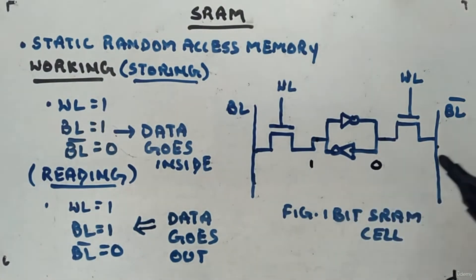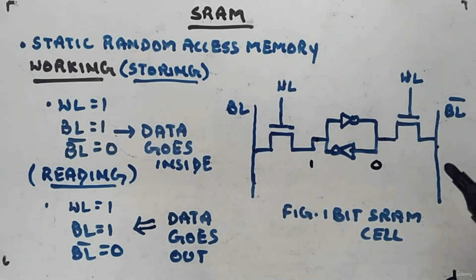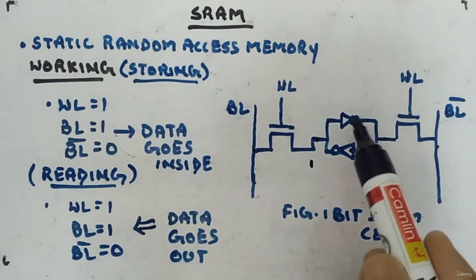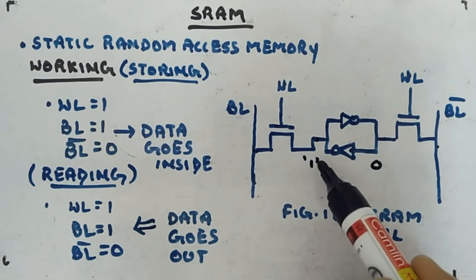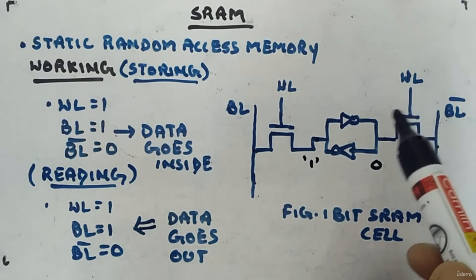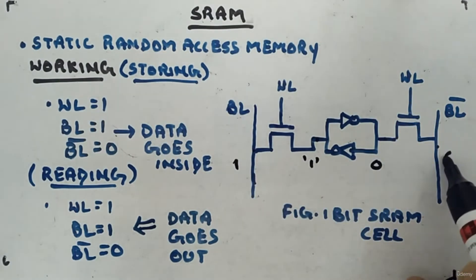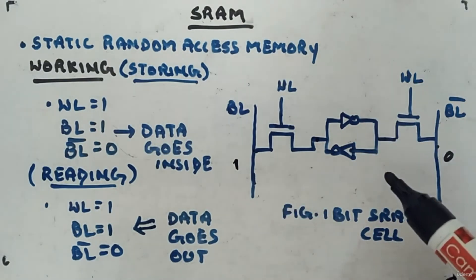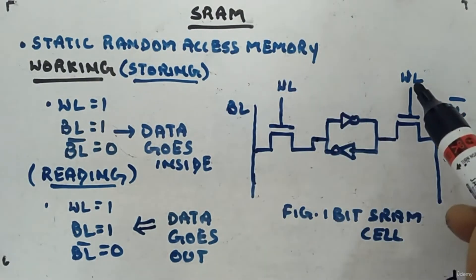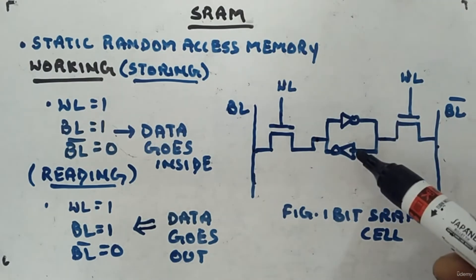When you store bit 1, you simultaneously have bit 0 at the complementary node — you store both bits in a sense. For reading: if logic 1 and logic 0 are present in the cell, as soon as you set WL = 1 (logic high), the 1 appears on BL and the 0 appears on BL bar. That's how you read the data. To write, put data on BL and BL bar, switch on the NMOS, and the data goes inside and stays.